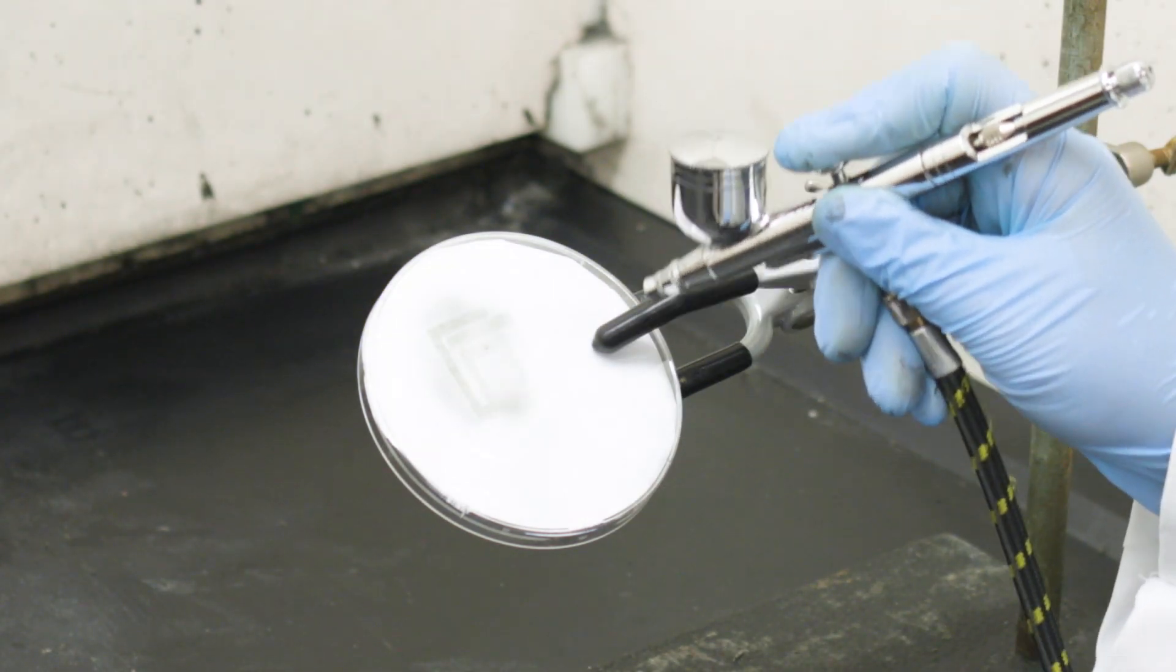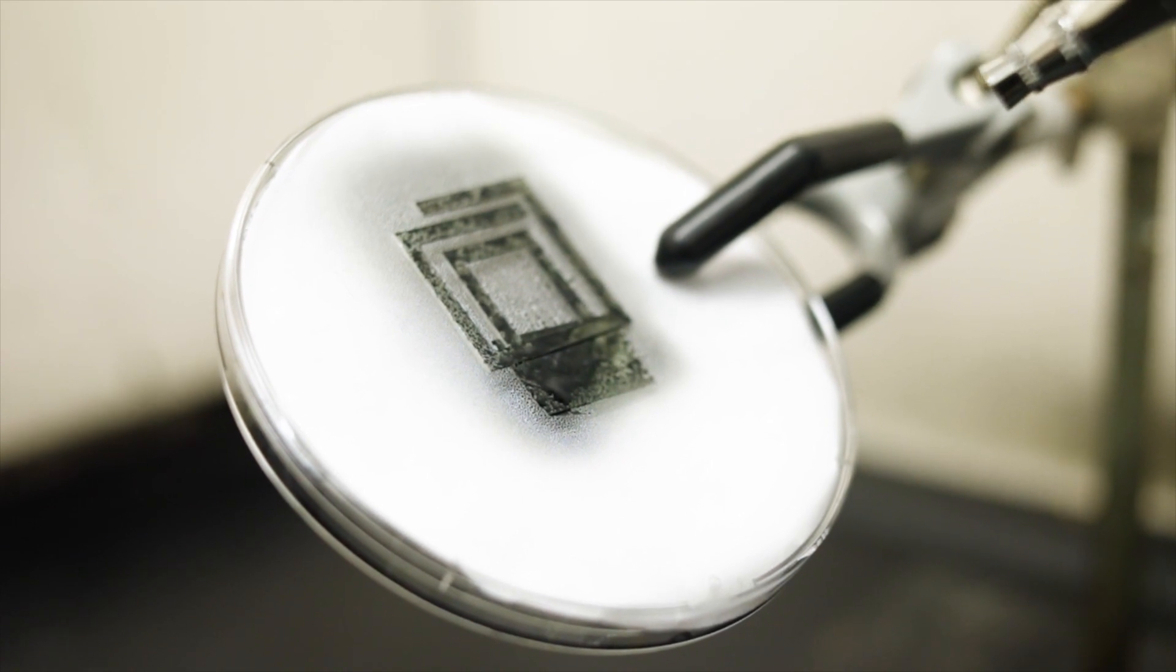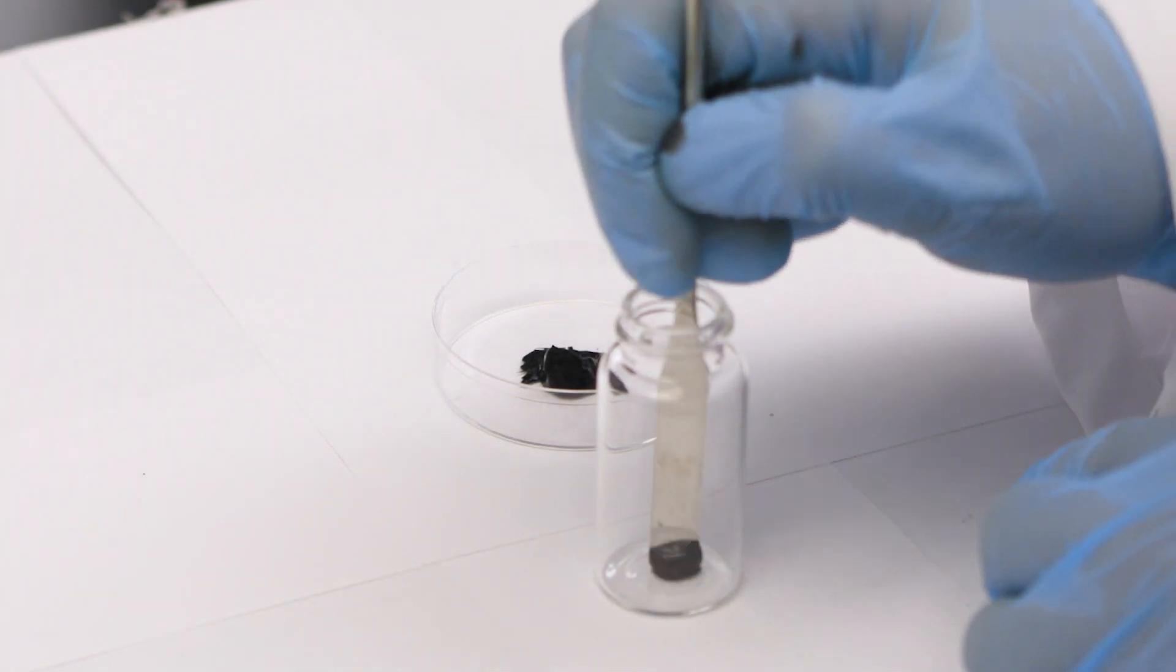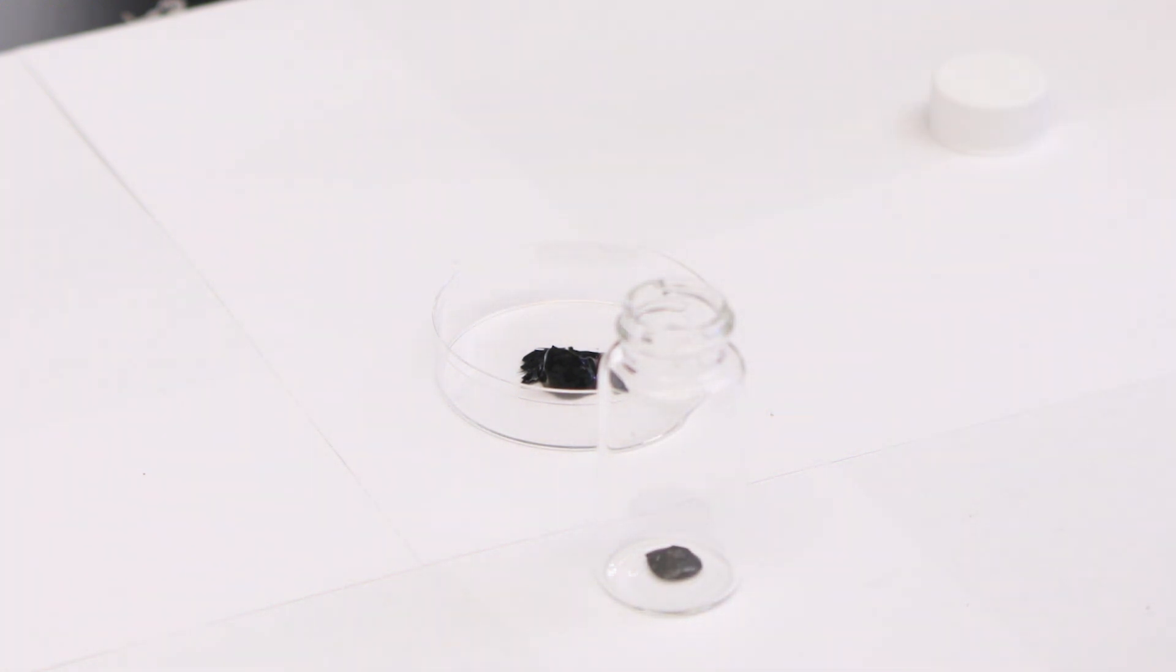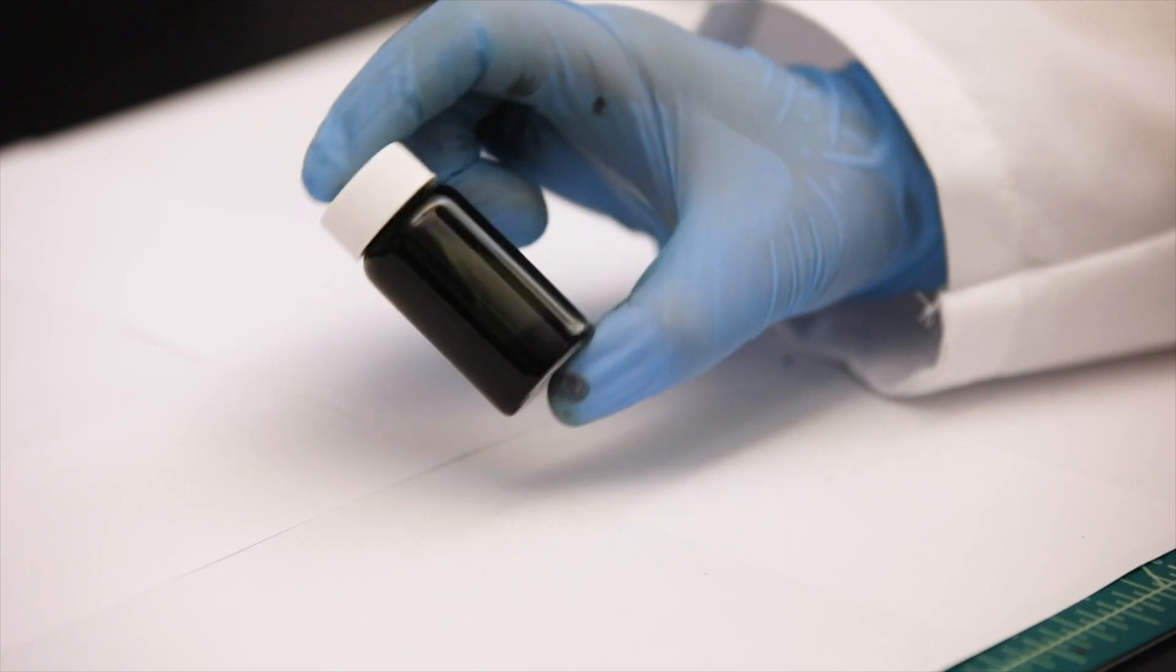At Drexel University, researchers are doing just that, spraying antennas. All it takes is a few dashes of a special water-soluble titanium carbide powder called MXene that was invented at Drexel. And a little water. Just mix, and voila! Antenna spray.